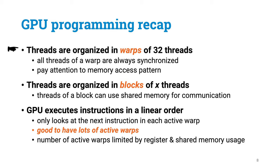Threads aren't independent — they are organized in warps of 32 threads, and all threads of a warp are always synchronized. If you access memory in one thread, all other threads also do a memory lookup, and you'd better make sure these memory accesses don't span too many cache lines, or it will get expensive. Threads are also organized in blocks, and you can choose the size of a block within some limits. The threads in a block can easily communicate with each other.